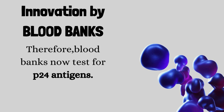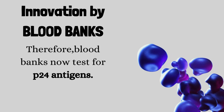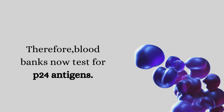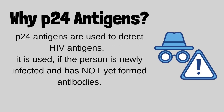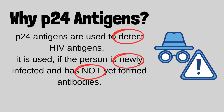What is special about p24 antigens? P24 antigens are used to detect HIV antigens. It is used when the person is newly infected and has yet to form antibodies.